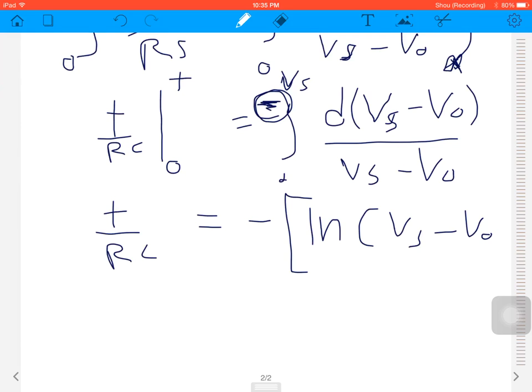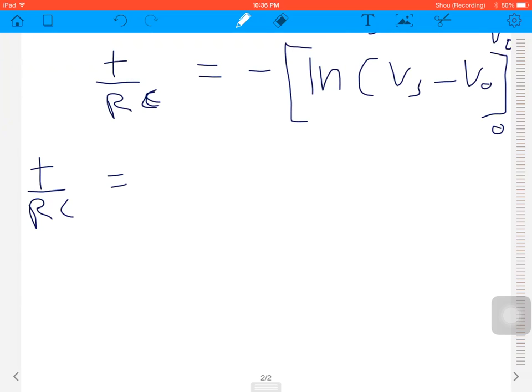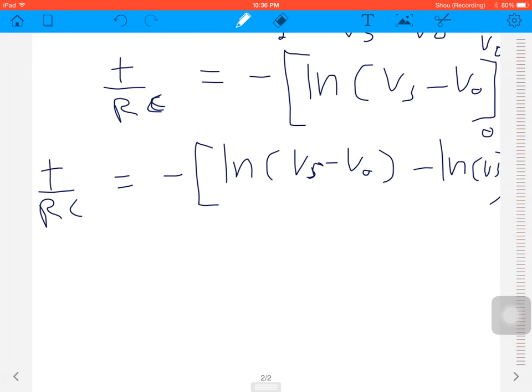Next step: on the left-hand side we got t over RC equals minus log of VS minus V out minus log of VS.